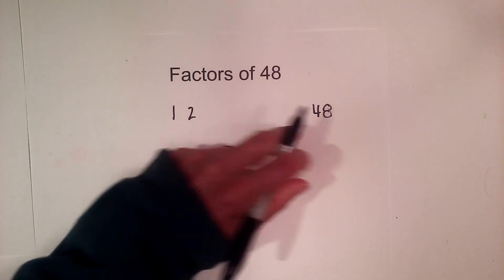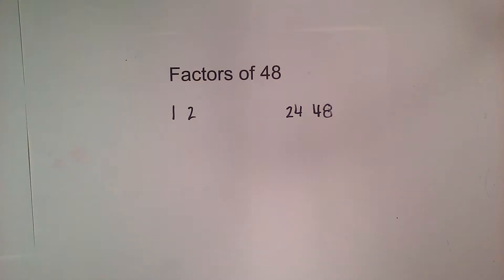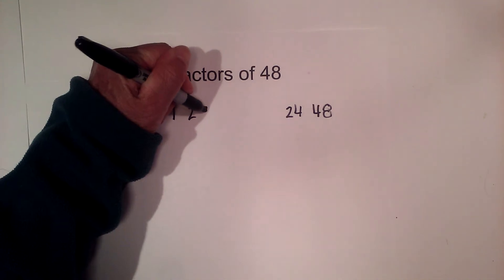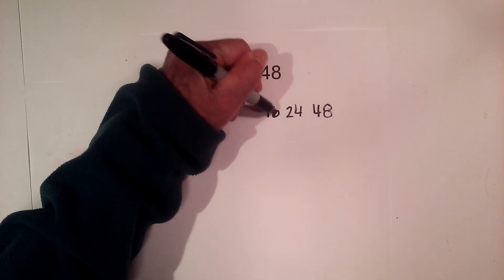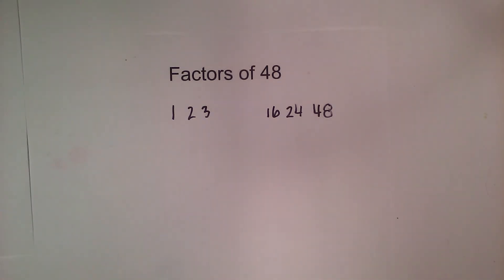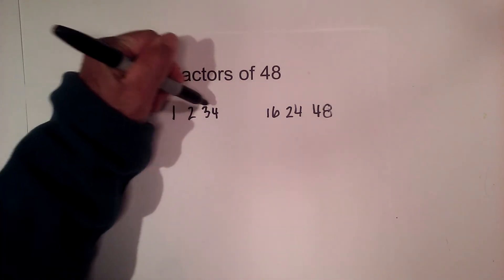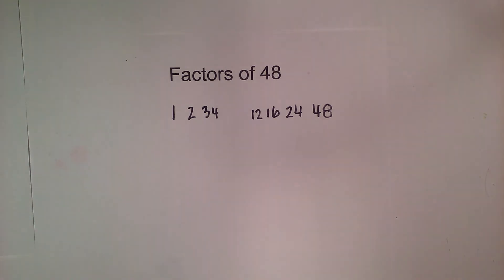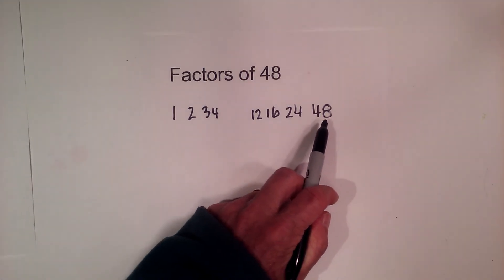2 times 24 equals 48. Next, will 3 go into 48? Yes, 3 goes into 48 16 times. Now will 4 go into 48? Yes, and 4 times 12 equals 48. Will 5 go into 48? No, because it doesn't end in a 5 or a 0.